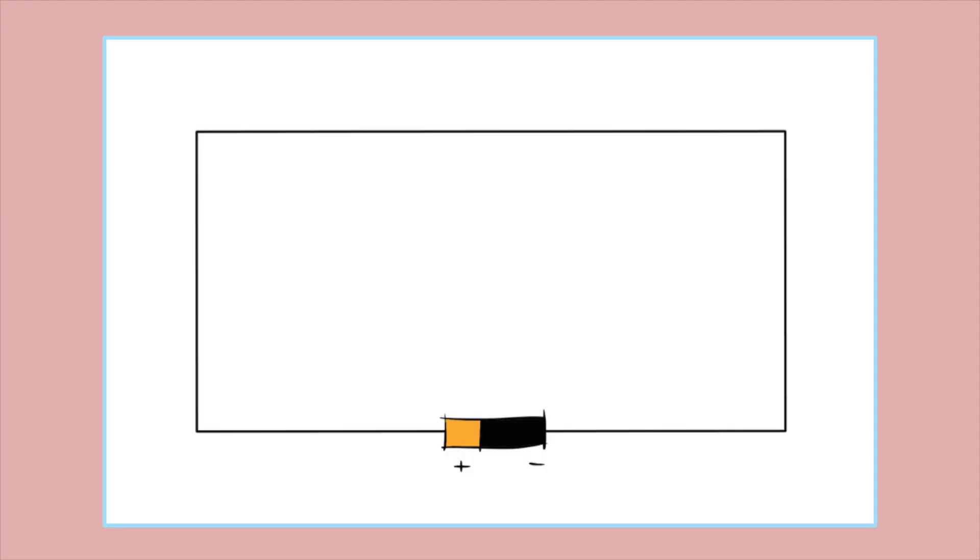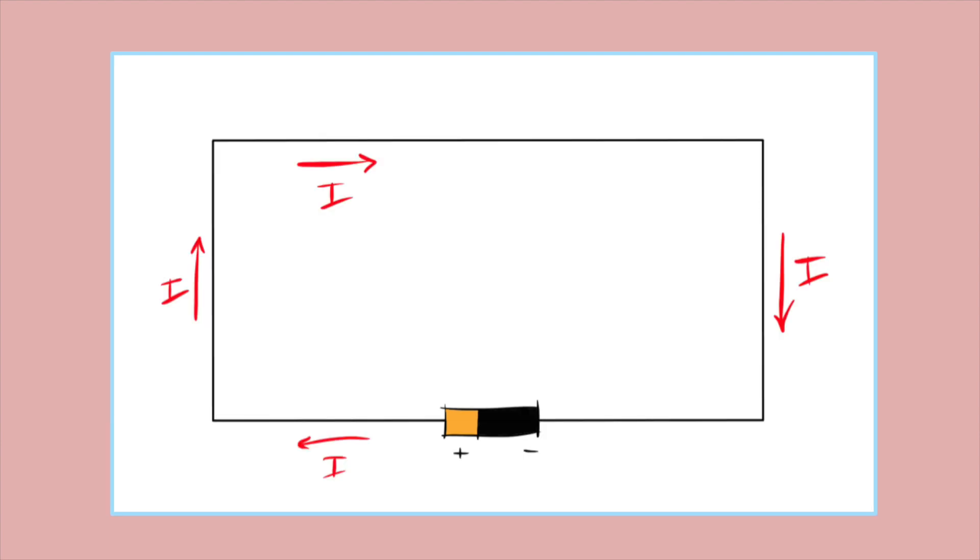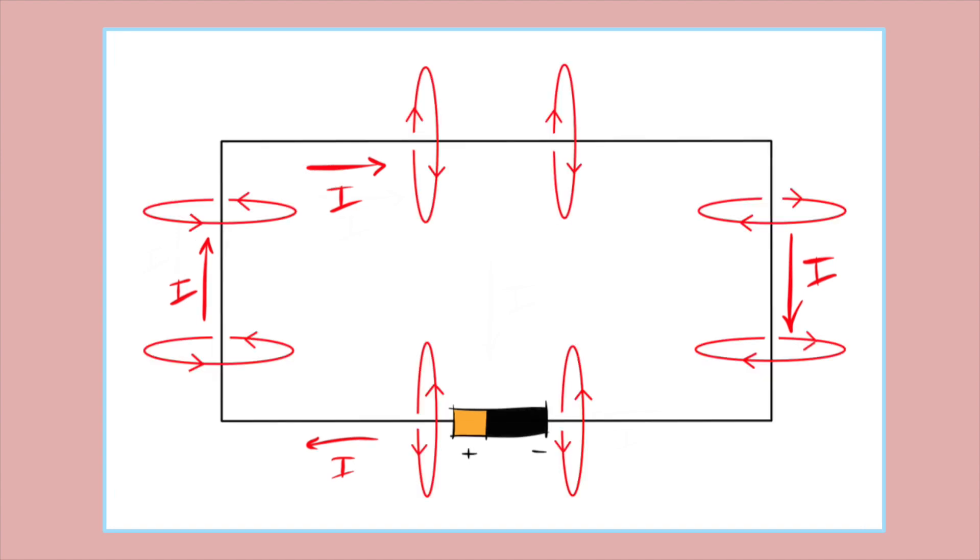Imagine that we connect a battery to a medium resistance wire as seen in the illustration. What we know is that conventional current will begin to flow clockwise around the circuit from the battery's positive terminal to its negative terminal. Now Orsted's Law states that an electromagnetic field will be created whenever current flows. So I have represented this in my illustration. Notice that the field loops around the wire circularly.